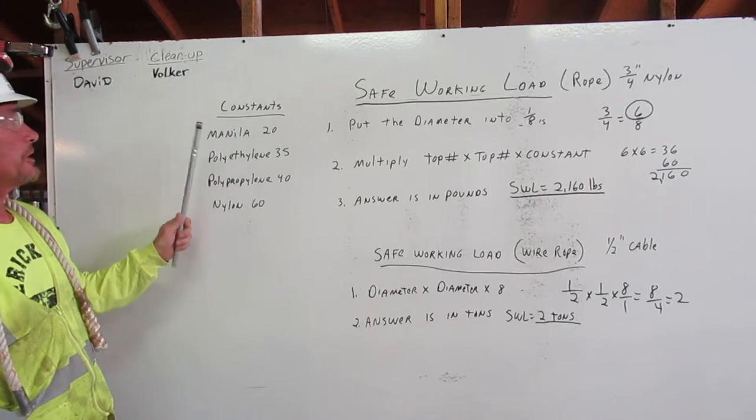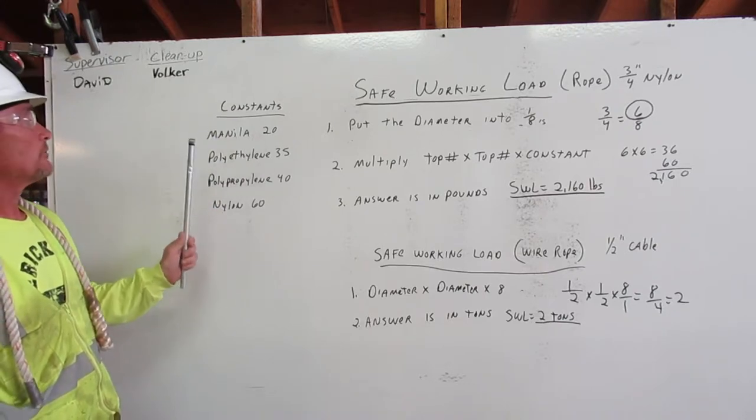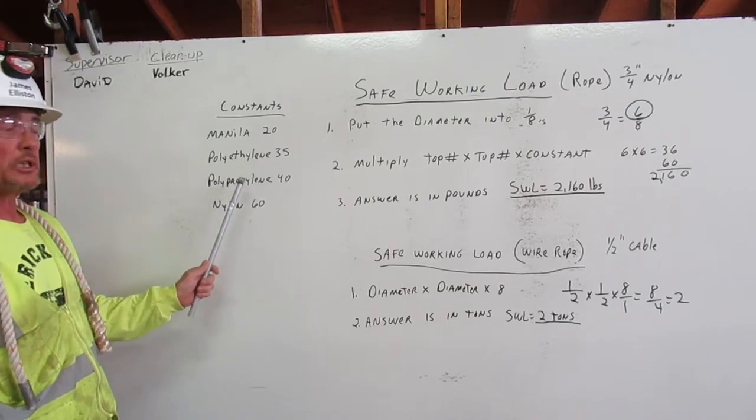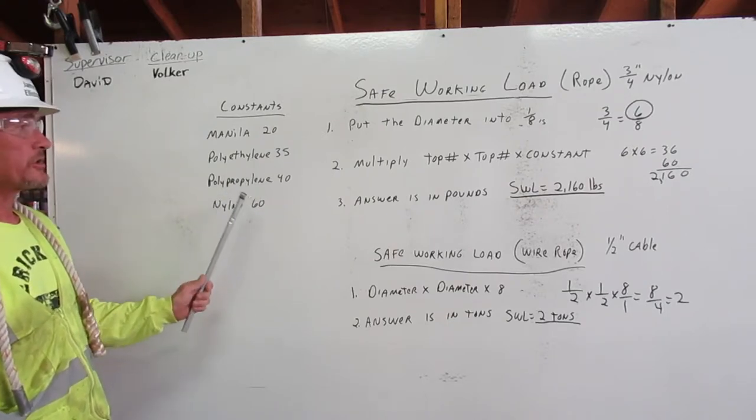Constants for manila rope are twenty, for polyethylene is thirty-five, polypropylene is forty, and nylon is sixty.